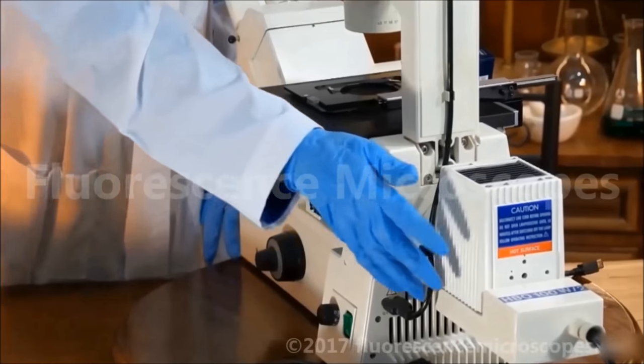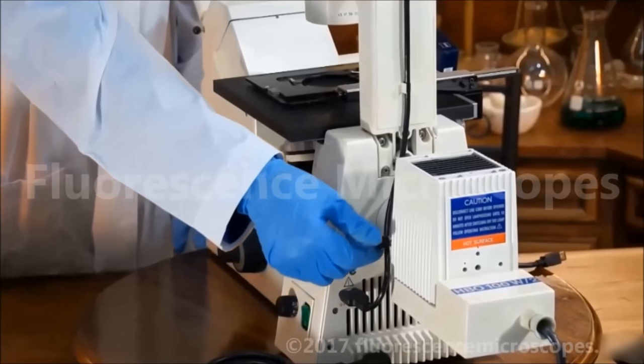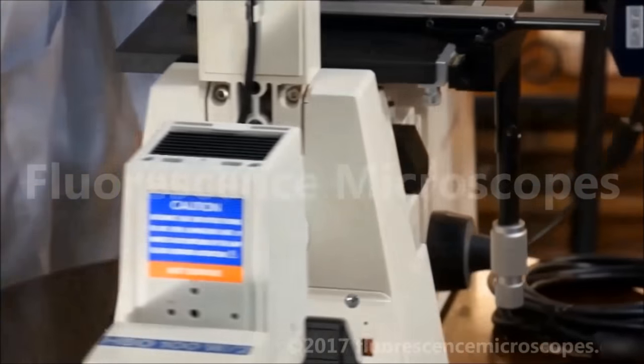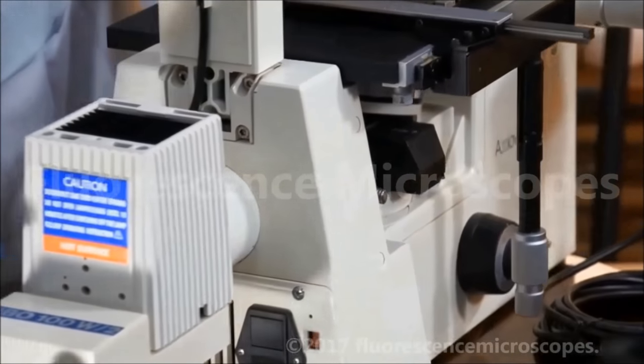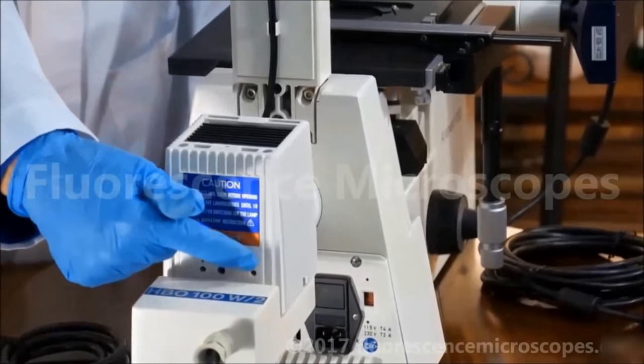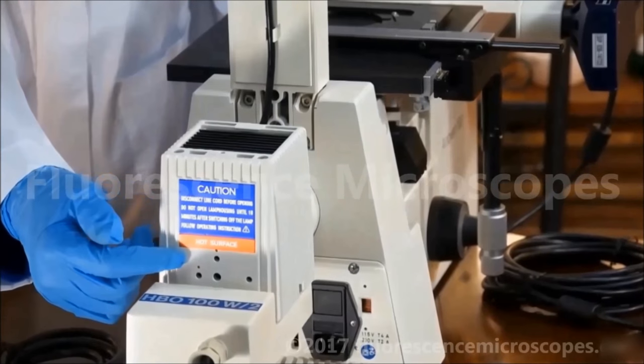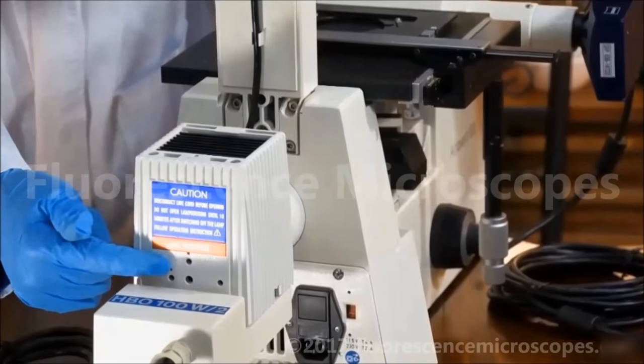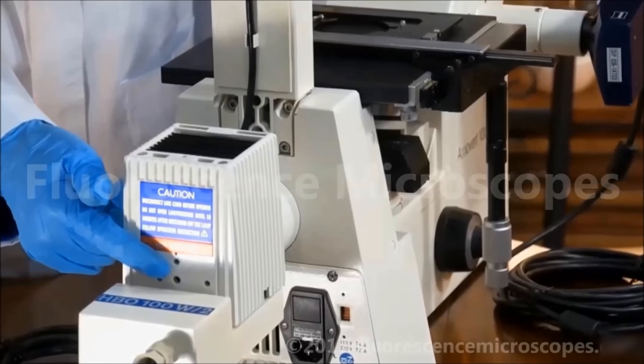There's some adjustment knobs to do the centering. This is for the collector focusing. On the back, you can see some openings where you can insert a 3-millimeter hex allen head wrench, and you can adjust the centering of the bulb.